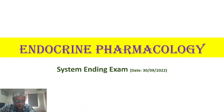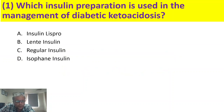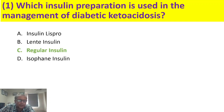Hello dear friends, today we will discuss the keys of the multiple choice questions of endocrine pharmacology. The first question is: which insulin preparation is used in the management of diabetic ketoacidosis? Diabetic ketoacidosis is an emergency condition requiring insulin administered by the intravenous route, and it is only regular insulin which is administered by the intravenous route. So the answer is regular or soluble insulin.